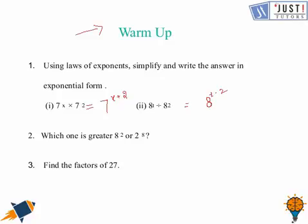Next, it is 8 to the power 2 or 2 to the power 8 — we need to find the greater one. The answer is 2 to the power 8. Next, we need to find the factors of 27, which would be 1 times 27 and 3 times 9. So the factors of 27 are 1, 3, 9, and 27.